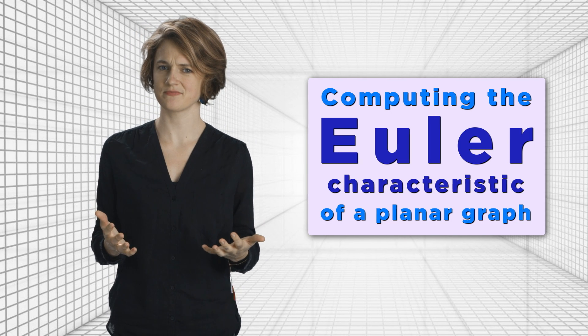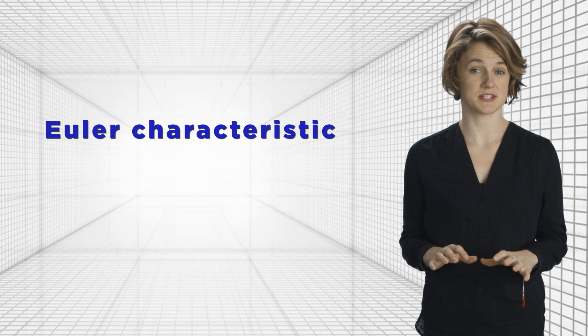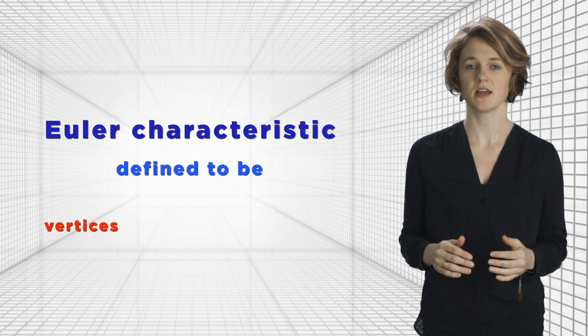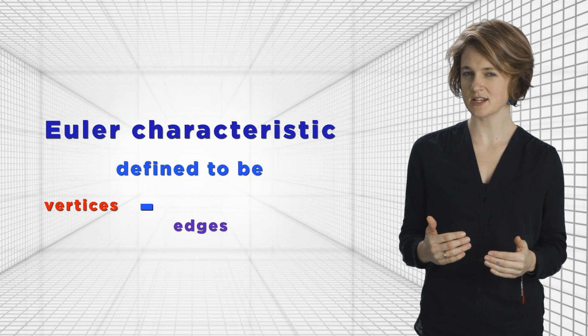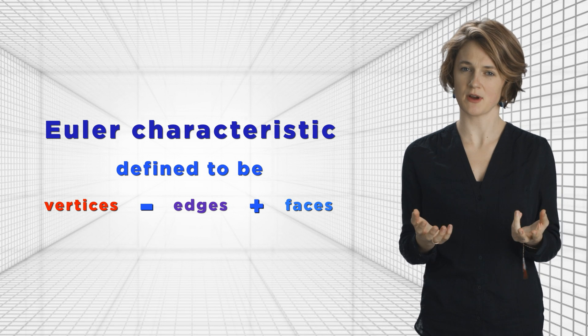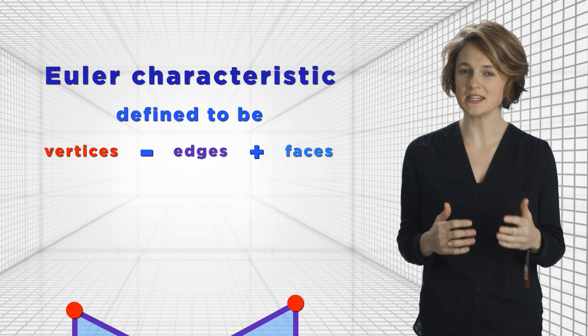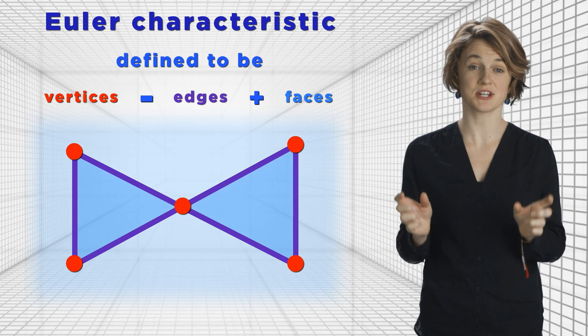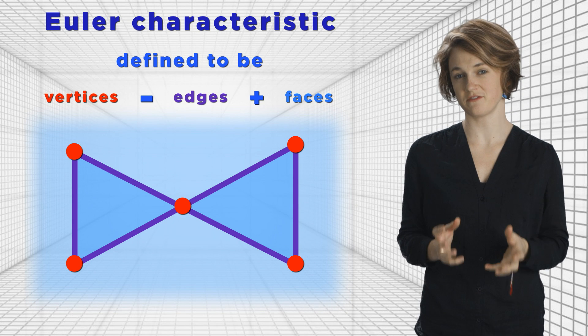Let's find out what that means. Let's say you have a graph, which is just a bunch of vertices connected by edges. Then the Euler characteristic of the graph is defined to be the number of vertices minus the number of edges plus the number of faces. The faces of a graph are just the spaces between the edges, plus the entire region outside the graph counts as one face.